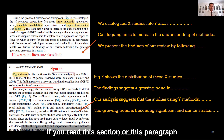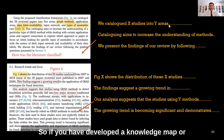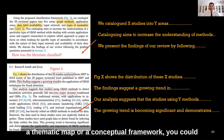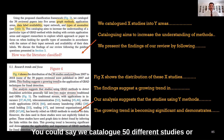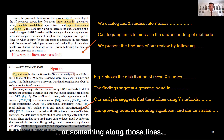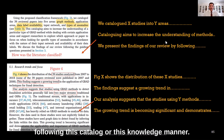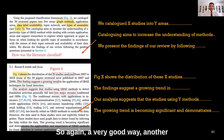Looking at more examples: 'We cataloged X studies into Y areas.' If you have developed a knowledge map, thematic map, or conceptual framework, you could use this kind of sentence — for example, 'We cataloged 100 different studies into seven high-order themes and 20 sub-themes.' Cataloging aims to increase understanding of the method. You can also write: 'We present the findings of our review by following this catalog or knowledge map' — a good way to mention the same idea.